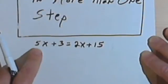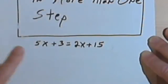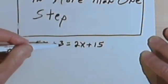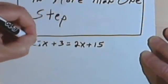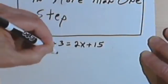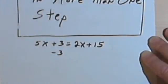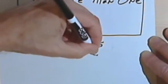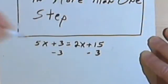So if I want to get the x by itself on the left side, the first thing I probably should do is get rid of this 3. So to get the 3 out of the left side, I'll subtract 3 from that side, which means I have to subtract 3 from the right side as well.